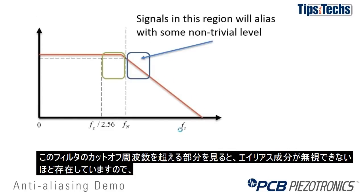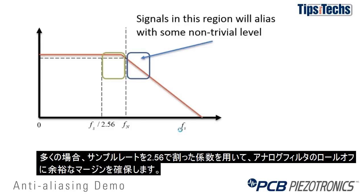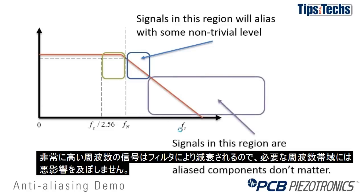If we look at the region just beyond the cutoff frequency of this filter, as shown here, we can see that we may still alias back with some non-trivial level. So typically we don't take our data right up to the Nyquist frequency. A lot of times we'll use a factor of the sample rate divided by 2.56 to give us a safety margin on the rolloff of the analog filter, because very high frequency signals will be rolled off significantly and not contribute after aliasing back into the frequency region of interest.